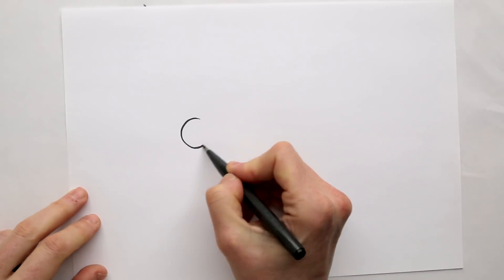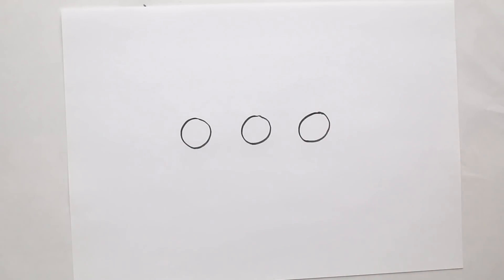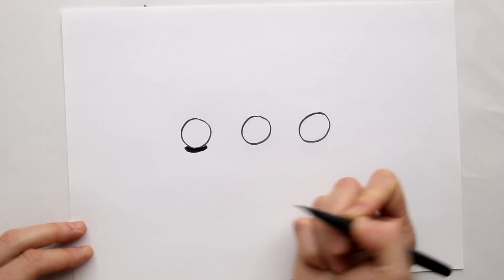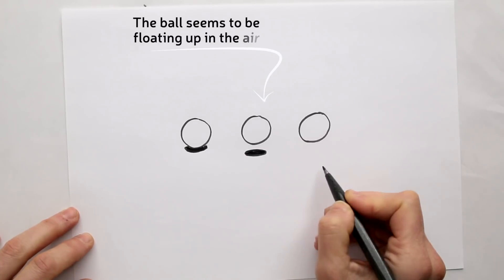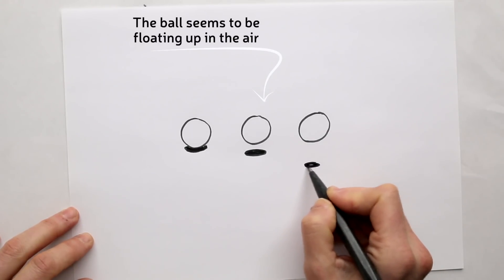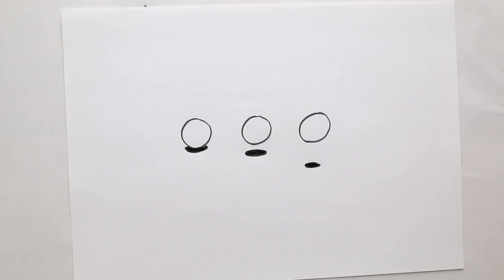Like we already established last week, the drop shadow adds context — there's a lot of information in there. For example, when I place the shadow further below this ball, suddenly it's floating. And with the shadow even further down and a bit smaller too, the ball is floating even higher. This is used in comics a lot, for example.